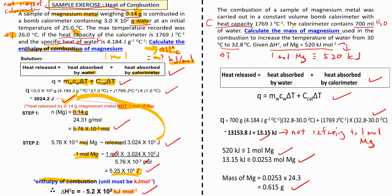Another type of question gives you heat capacity capital C and also water, so the formula is MC∆T + C∆T. There's another interesting piece of information: it gives you the enthalpy of combustion directly. When it gives you the enthalpy of combustion, you can straight away write that one mole of magnesium will release 520 kilojoules of heat. Remember there must be a negative sign here.